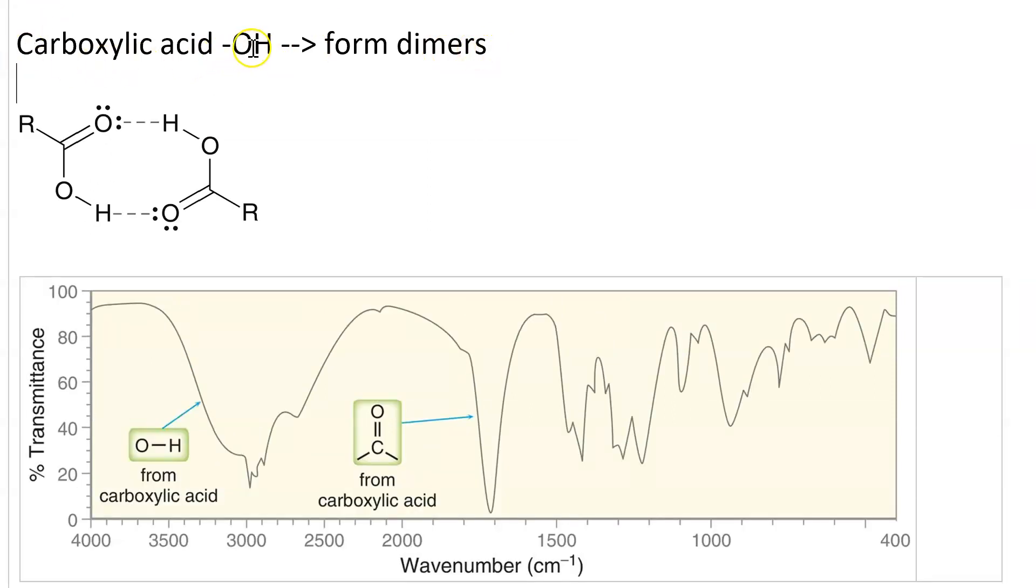In a carboxylic acid, there should be an OH stretch, but now the carboxylic acid molecules can dimerize with one of them acting as a hydrogen bond donor to the carbonyl on the other. So it makes this nice little cyclic dimer.